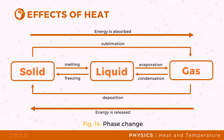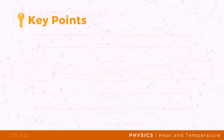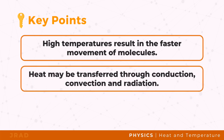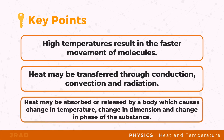In this lesson, you learned that high temperatures result in faster movement of molecules. Heat may be transferred through conduction, convection, and radiation. Heat may be absorbed or released by a body, which causes change in temperature, change in dimension, and change in the phase of the substance.